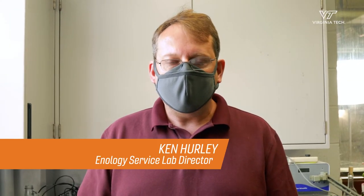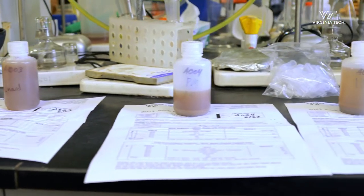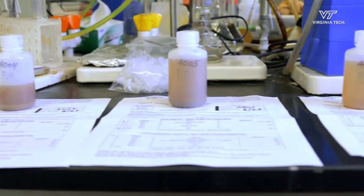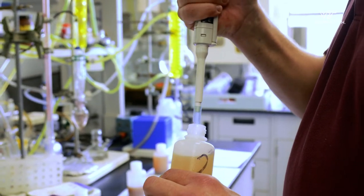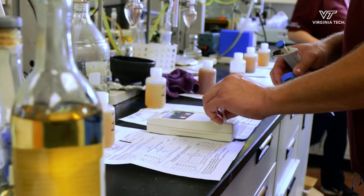The other options at the time were California or France, so the winemakers came to Virginia Tech and asked for a local option. In that first year we received samples, one of the things we noticed is about 25% of the samples had sulfur-like off odors. These sulfur-like off odors come from the fact that there wasn't quite enough yeast available nitrogen in the juice.